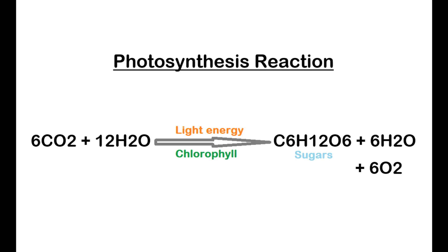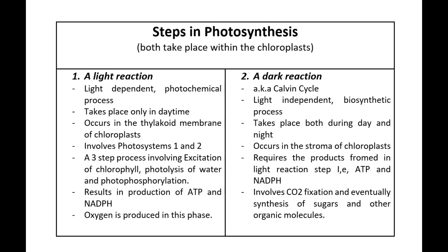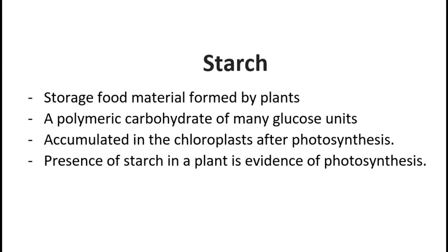The chemical reactions that take place in this process may be summarized as follows. Photosynthesis occurs in two major steps, both of which take place within the chloroplasts: a light reaction and a dark reaction. Starch is eventually formed as a reserve food by plants at the end of a photosynthetic process.